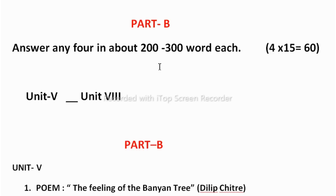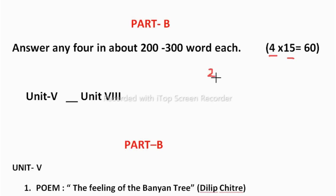In Section B you have to answer any 4 questions in about 200 to 300 words each. For each question you will get 15 marks, totalling 60 marks. Now 200 to 300 words means you have to write 3 or 4 full pages — that would be 2 full papers, front and back.